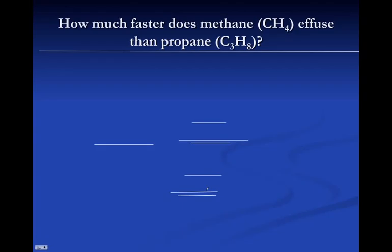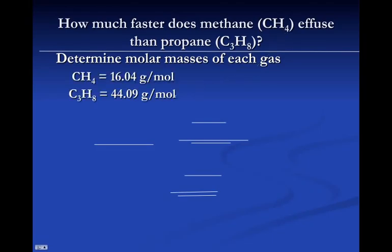Let's try some other numbers, actually. Here we've got methane and propane. And you find the molar masses of each gas. You just add up the three carbons and the eight hydrogens for the propane and the one carbon and the four hydrogens for the methane.